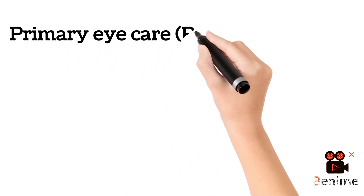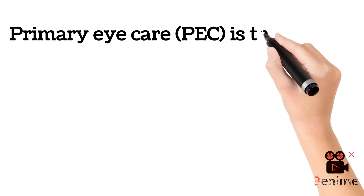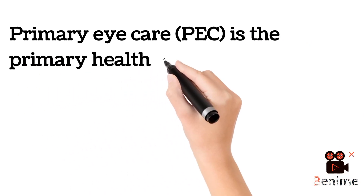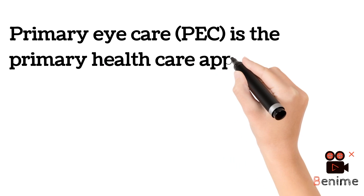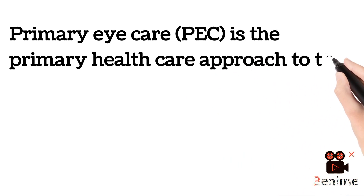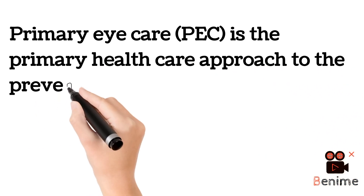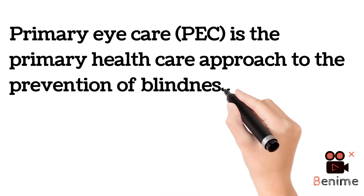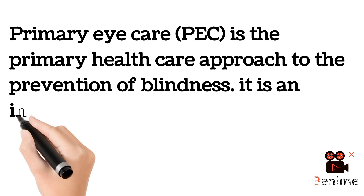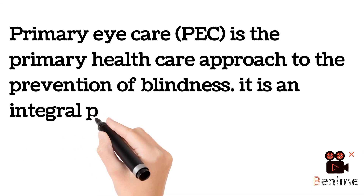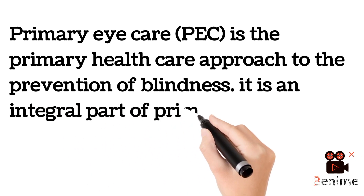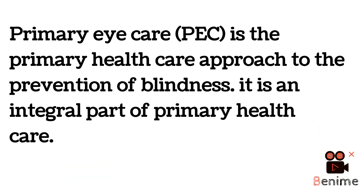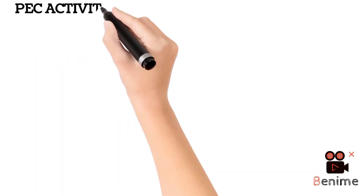Primary eye care is the primary health care approach to the prevention of blindness. It is an integral part of primary health care. Primary eye care is a frontline activity which includes providing care and identifying diseases before they become a serious medical issue. It is a vital component of primary health care.